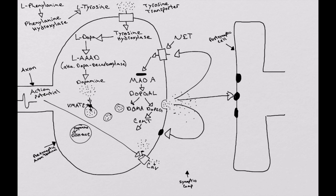At that point, it's broken down into DOMA, which is dihydroxymandelic acid, which is a metabolite that really has no significance. Or it's broken down into DOPEG. And DOPEG is 3,4-dihydroxyphenylglycol.